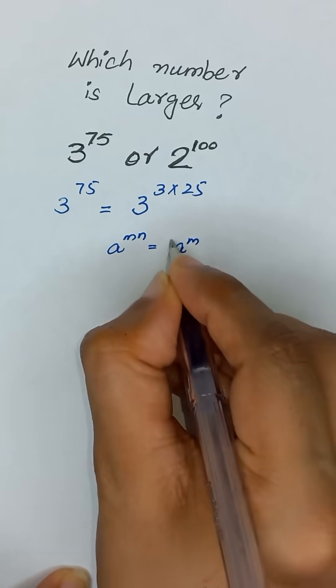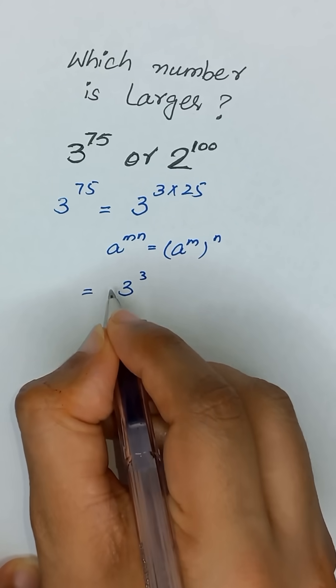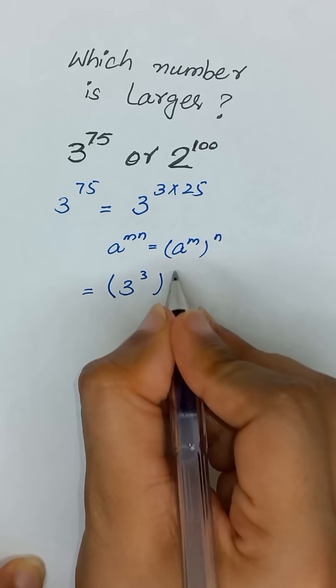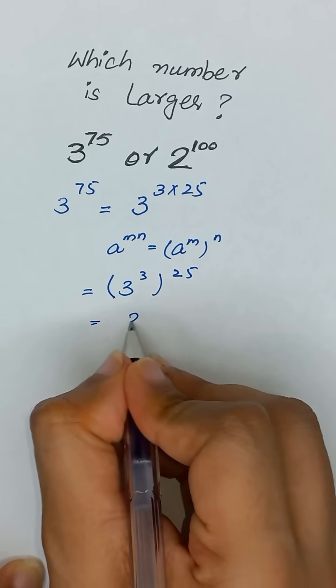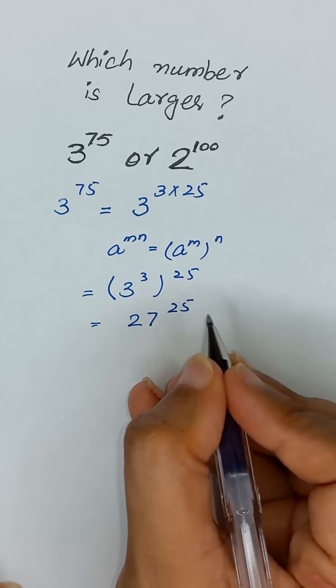Now it is in the form of a to the power m times n, so we can write it as a to the power m whole power n. So it will become 3 to the power 3, and its power 25. 3 to the power 3 is same as 27, so it will become 27 to the power 25.